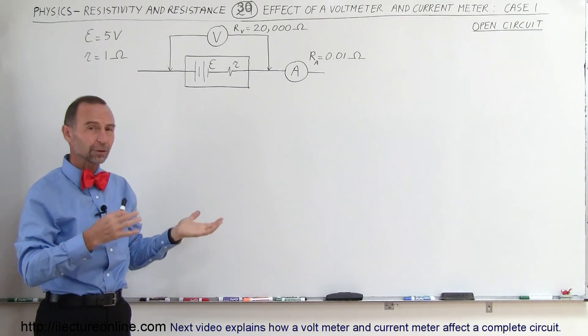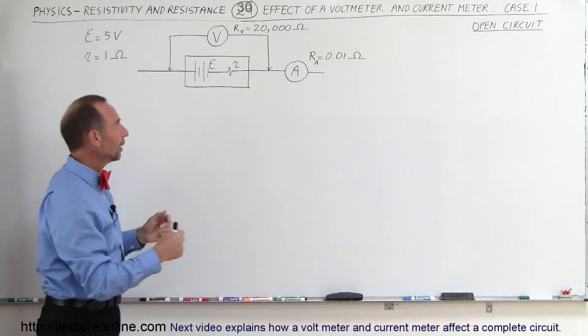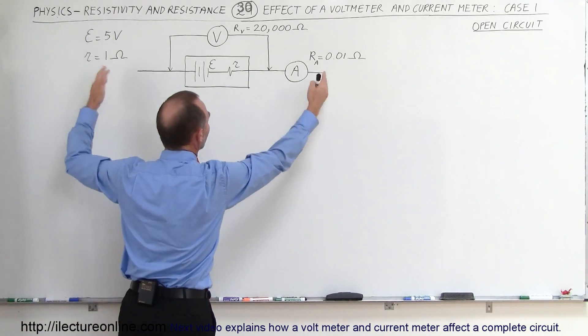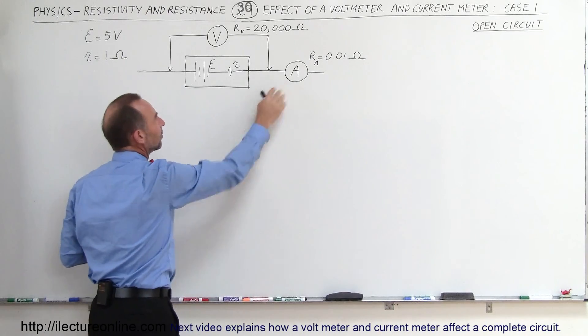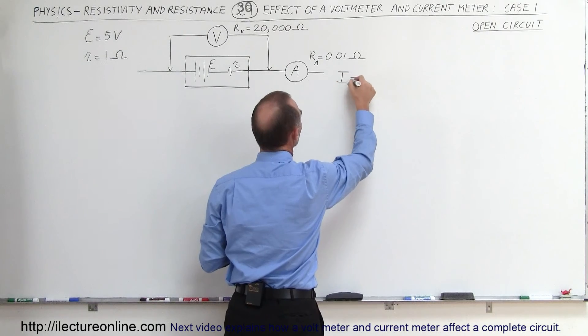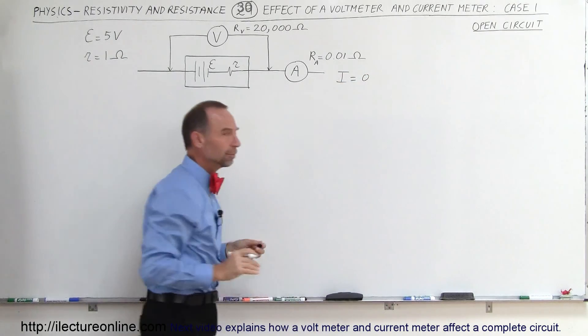So what would the voltmeter and the current meter read here? Well, since there is no current flowing through the circuit because there's nowhere for the current to go, you can say that the current meter will show zero current. So I equals zero at the location of the current meter.